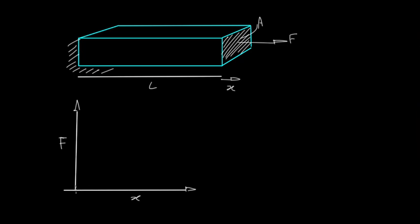So first of all, as you start to pull on the bar, the relationship is actually linear. The force is proportional to the extension, and that's what's known as Hooke's Law.